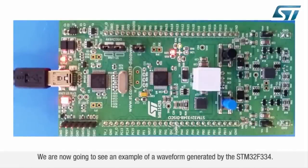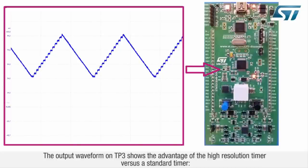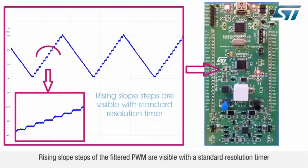Press the button again to exit manual LED dimming mode. We are now going to see an example of a waveform generated by the STM32F334. The output waveform on TP3 shows the advantage of the high-resolution timer versus a standard timer.